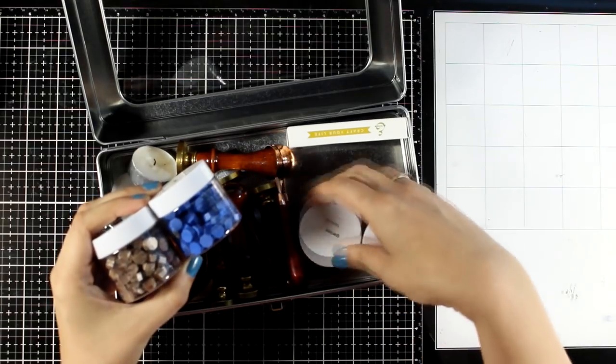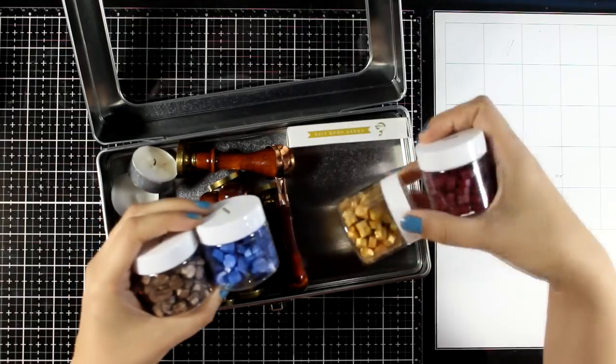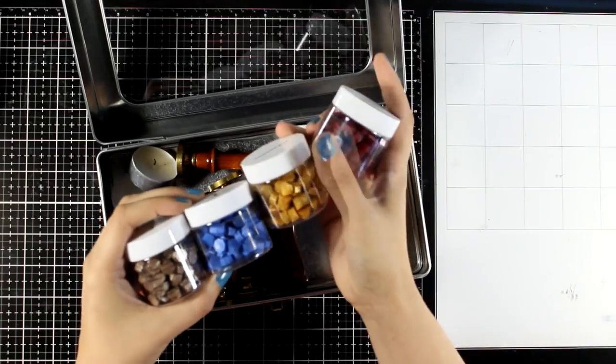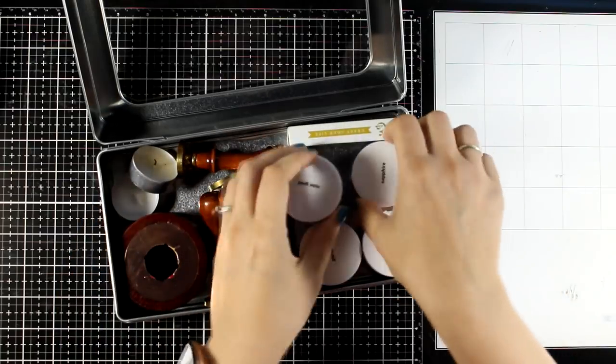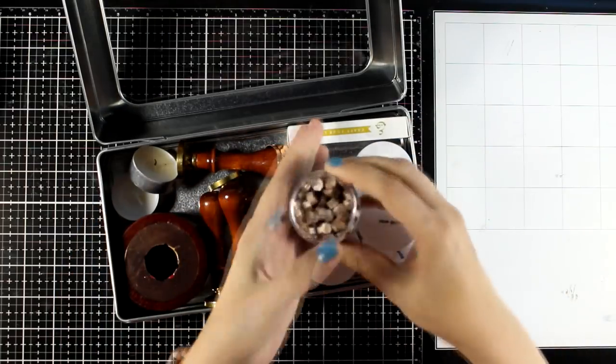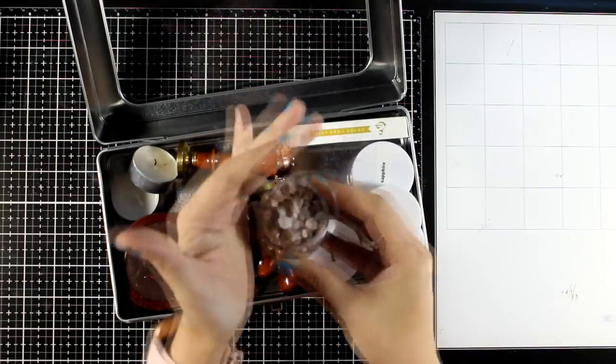You can find a big variety of colors of waxes that you can use. I have four of the colors here and these are by Altenew, and you can find them as beads like the ones that I have here in a jar which are very convenient to use. You can see here you just add four or five of those in a spoon and you just melt them.